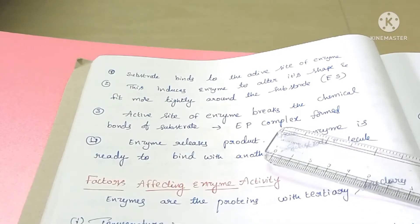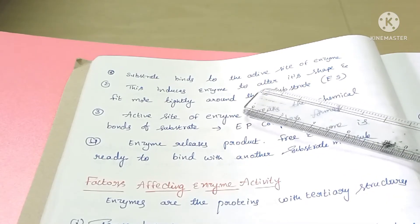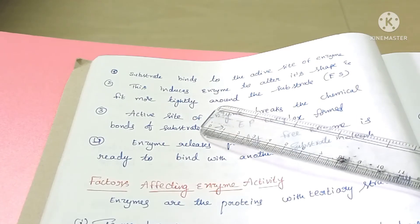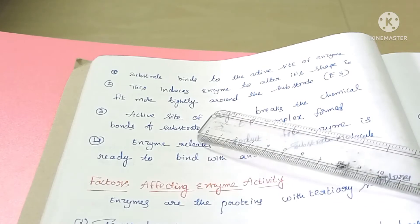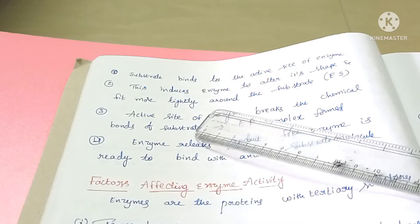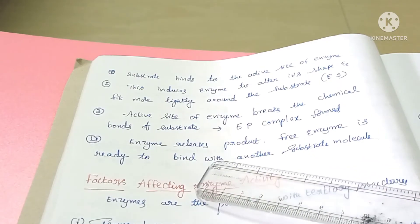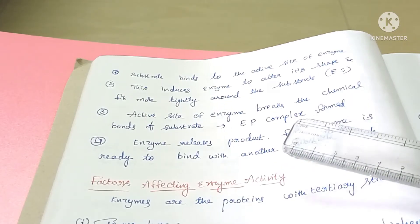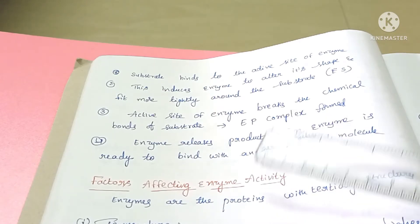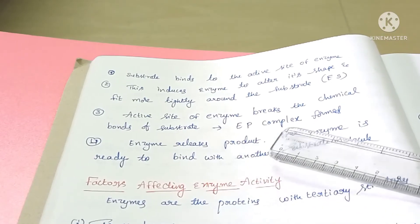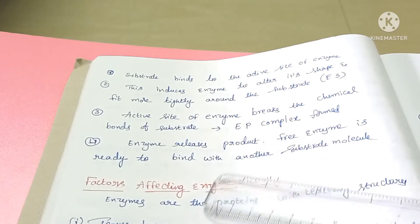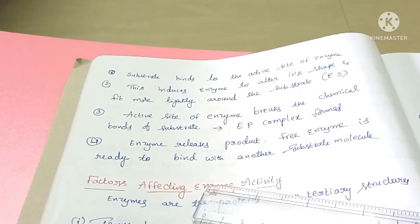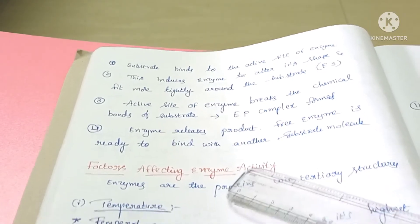We see the catalytic action of the enzyme — the following events occur. First, the substrate binds to the active site of an enzyme, and after binding, that induces the enzyme to alter its shape to fit tightly around the substrate. The active site of the enzyme breaks the chemical bonds present in the substrate — some bonds are broken and new bonds may be created — so the substrate is converted into the product, and the enzyme-substrate complex is converted into the enzyme-product complex. Then the product is released from the enzyme; the free enzyme is ready to bind with another molecule of substrate. This is called the catalytic cycle of enzyme action.